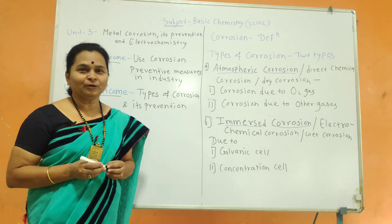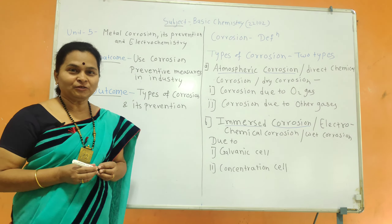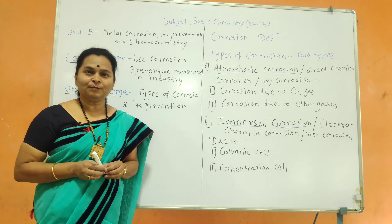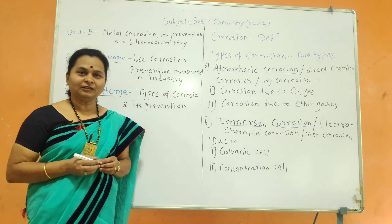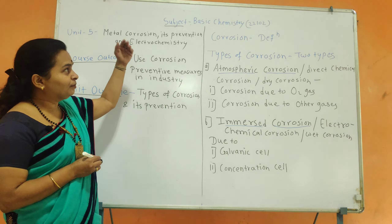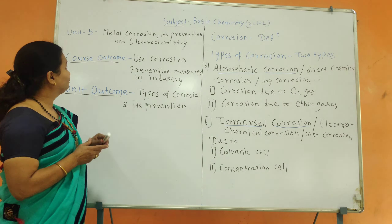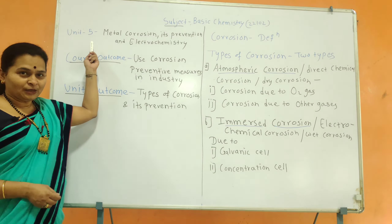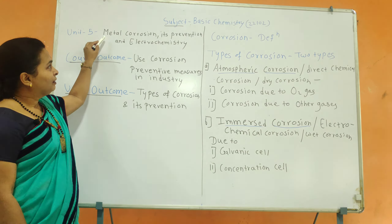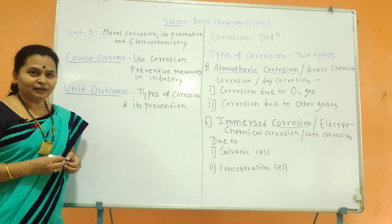Hello, my name is Viddharthi Mitra Anno. In our basic chemistry course, with course code 2-2-1-0-2, we are going to start the second chapter. The second chapter is called Metal Corrosion, Its Prevention and Electrochemistry.